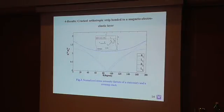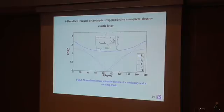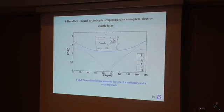In the next example, the interaction between two cracks is examined. The first crack L1 is fixed, and the second crack rotates around its center for different orientations. For the rotating crack, when theta equals zero, the traction on that crack is zero, so the stress intensity factor goes to zero. This example specifically examines the interaction between the two cracks.